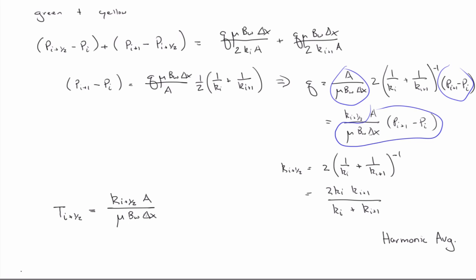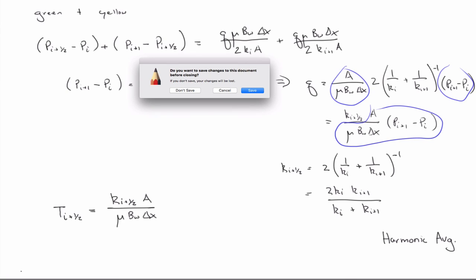So the next thing we'll talk about is heterogeneities in the grid block size.